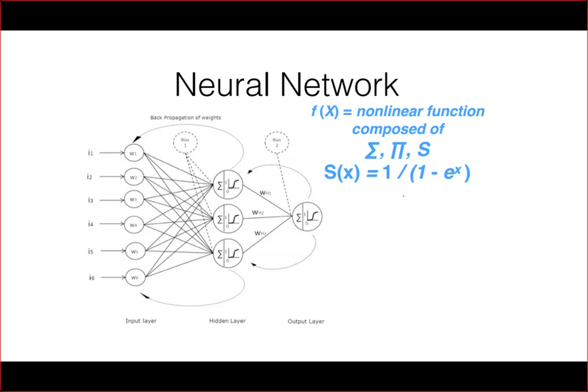The neural network is the function. The important thing about a neural network is that they are universal approximation machines. There's a mathematical proof — the universal approximation theorem — which tells us that this kind of function is capable of handling any kind of problem we throw at it, whether that's translating English into Hungarian, recognizing pictures of cats, or identifying unhealthy crops. It can handle any of these things.